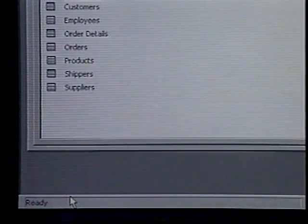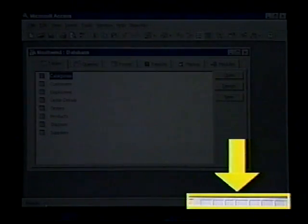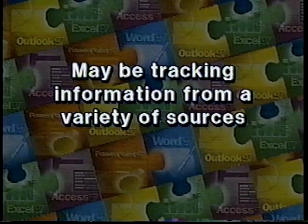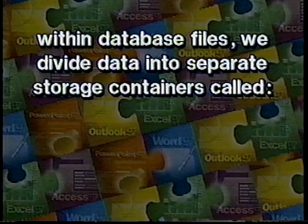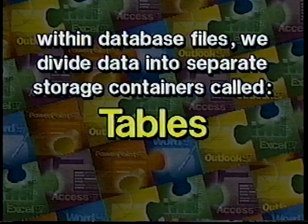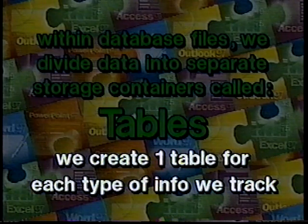The status bar displays status messages on the left and specific modes along with locking keys on the right. A database is an organized collection of related information or data stored for easy, efficient use. A telephone directory or a check register are examples of databases. If our database isn't stored on a computer, we may be tracking information from a variety of sources that we are having to coordinate and organize ourselves. With Microsoft Access, we can manage all of our information from a single database file.